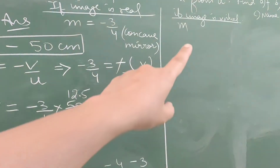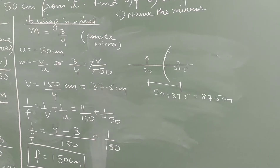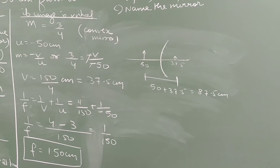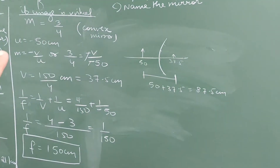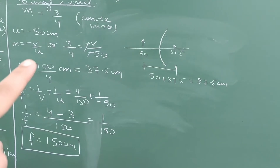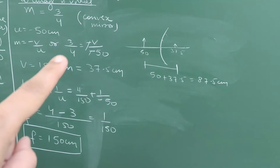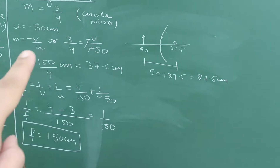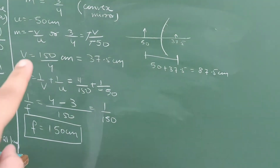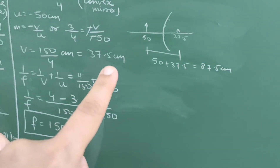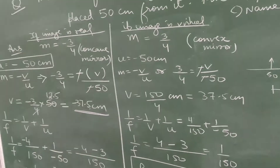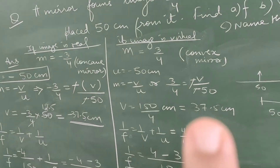Now if the image is virtual, magnification will be positive: m = plus 3/4. We consider a convex mirror. Object distance is minus 50. Putting values into m = minus v/u with m = +3/4 and u = minus 50, the image distance comes out to be positive 37.5 centimeters — unlike the concave mirror case where it was negative.